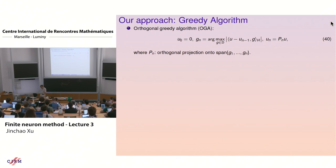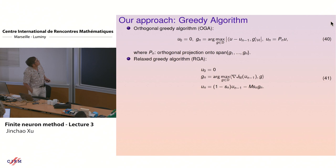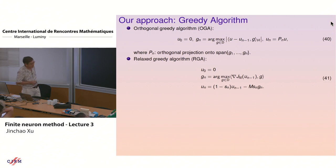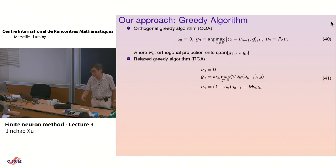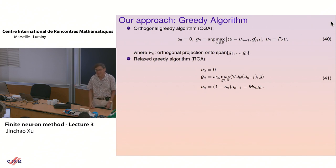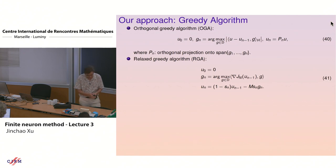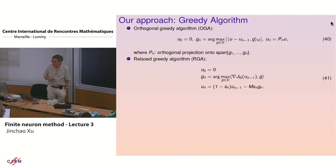Gradient descent does converge for low-frequency components — you can get the profile of the solution and certain accuracy — but to further improve accuracy it stagnates. So we use the greedy algorithm. The greedy algorithm: you look at the residual, and it's a residual-correction method. You want to find the residual direction, but your dictionary — the neurons — are not exactly in the residual direction, so you find the best fit in that direction. Then you do gradient descent in that direction — this is called the greedy algorithm, adding one neuron at a time.